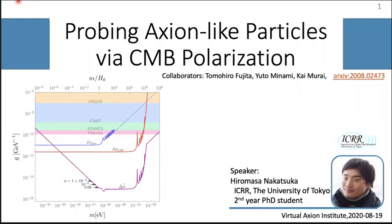I'm Hiromasan Nakatsuka in the ICA lab at the University of Tokyo. Today I would like to talk about my recent paper, 'Probing axion-like particles via CMB polarization,' in collaboration with Tomohiro Fujita, Yutominami, and Kim Lai. In this talk I will explain the meanings of this figure.